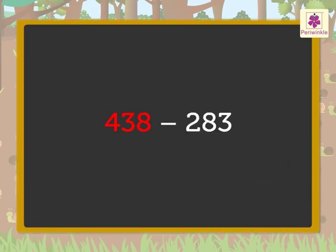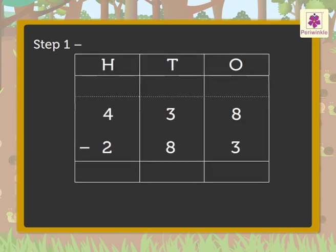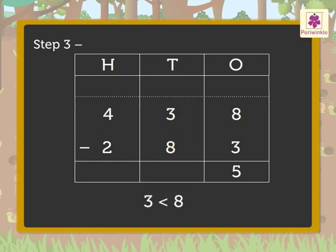Now let us subtract four hundred thirty-eight and two hundred eighty-three directly. Step one: write the numbers in the hundreds, tens, and ones columns. Step two: subtract the ones — eight minus three equals five; write five in the ones column. Step three: subtract the digits in the tens column, that is three and eight. As three is smaller than eight, we regroup four hundreds as three hundreds plus ten tens.